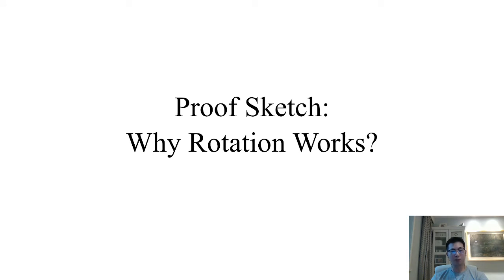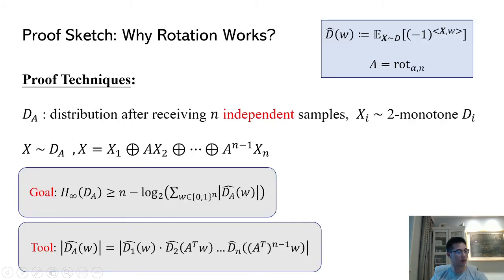Now let's move on to the proof section. In this part, I will present our proof techniques, our main lemma, and a brief proof sketch to answer why rotation works. Suppose each sample is independently sampled from some two-monotone distributions of min entropy k. After receiving n such samples, we denote the distribution of the register as dA. Here A is rotation by alpha. To see whether dA has linear entropy, we need to compute the min entropy of it.